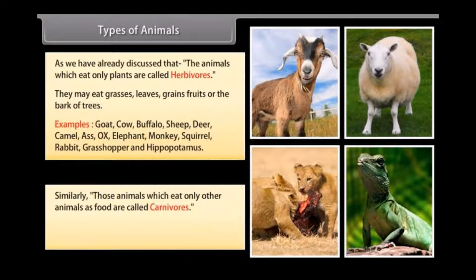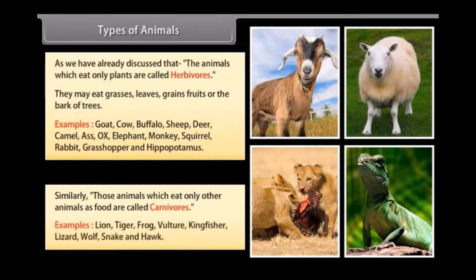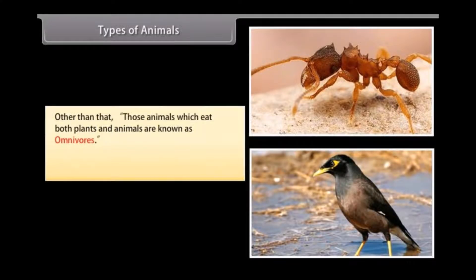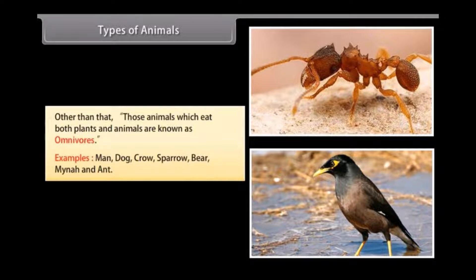Animals which eat only other animals as food are called carnivores. Examples include lion, tiger, frog, vulture, kingfisher, lizard, wolf, snake, and hawk. Animals which eat both plants and animals are known as omnivores. Examples include man, dog, crow, sparrow, bear, myna, and ant.